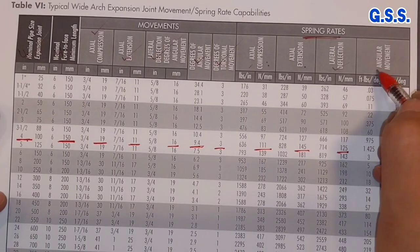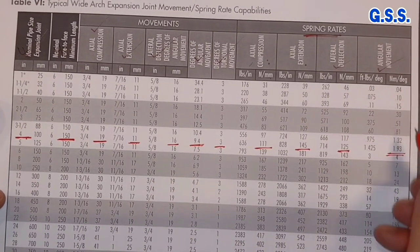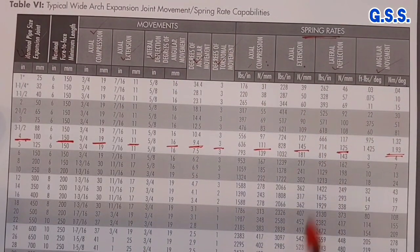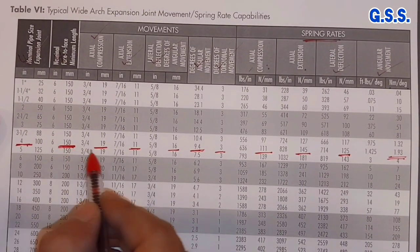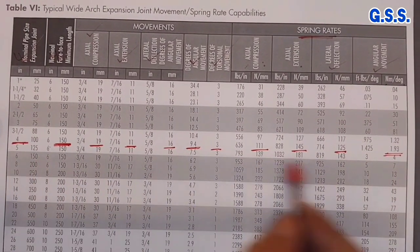And for angular movement, deflection is 1.93 Newton per millimeter per degree. So, in this FSA standard, actually this type of face-to-face length, spring rate, and allowable movement, everything has been specified.